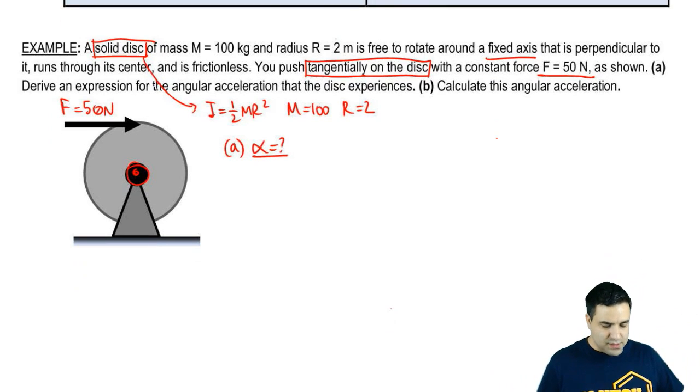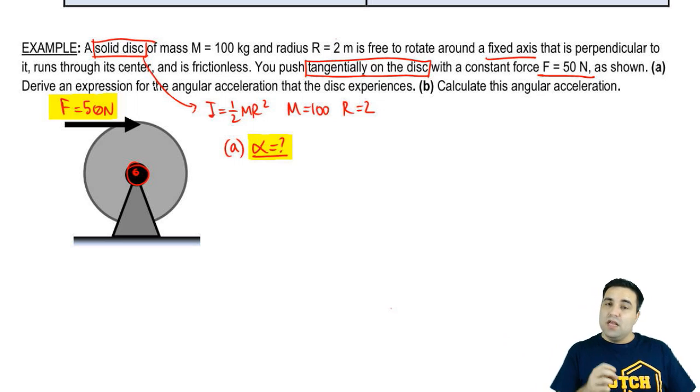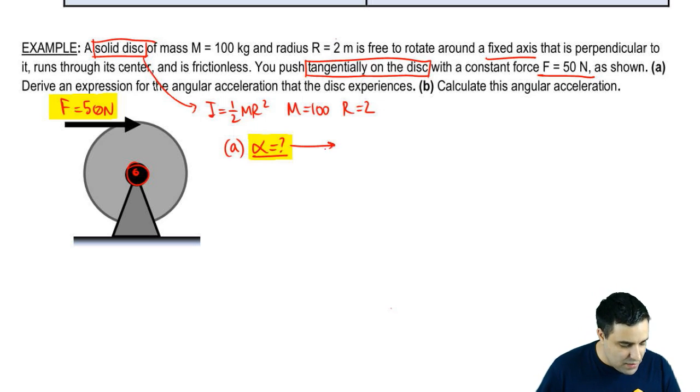So how do we do this? Well, I'm giving you a force and I'm asking for an alpha. Back in the day, if I gave you a force and asked you for A, you would use F equals MA. But here I'm giving you a force but asking for an alpha. So instead, you're going to use sum of all torques equals I alpha. And that's because you're looking for alpha.